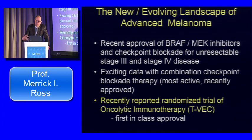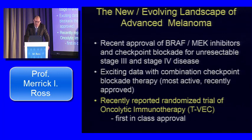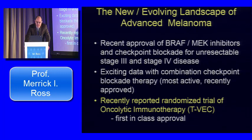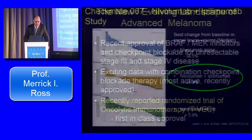We need to look at these therapies in the context of the evolving treatment landscape for advanced melanoma. There has been recent approval of BRAF-MEK inhibitors and checkpoint blocking agents for unresectable stage 3 and stage 4. In the last five years, 10 new regimens have been approved for advanced melanoma — it's pretty amazing. Exciting data with combination checkpoint blocking therapy represents the most active and recently approved therapy for metastatic melanoma. The oncolytic immunotherapy TVEC received its first-in-class approval back in October 2015.